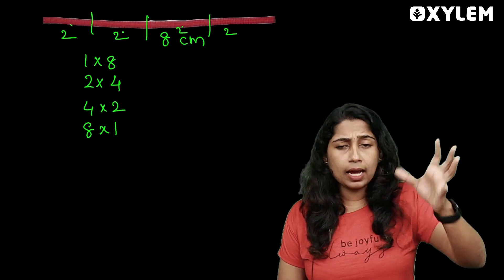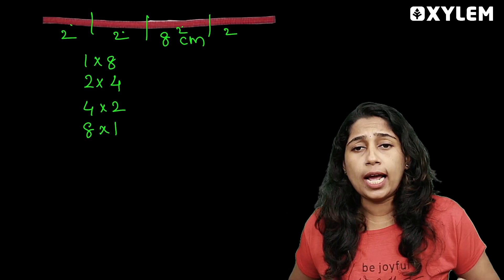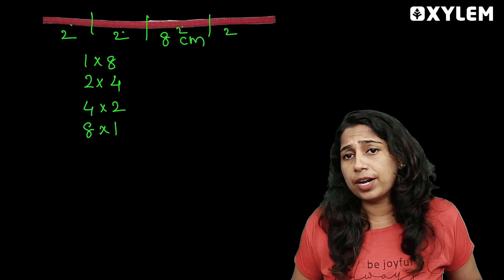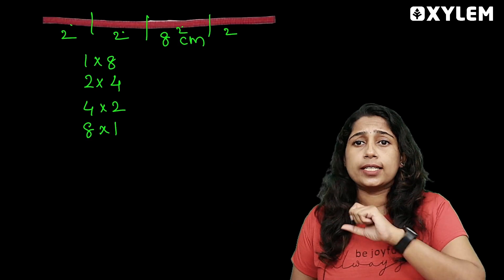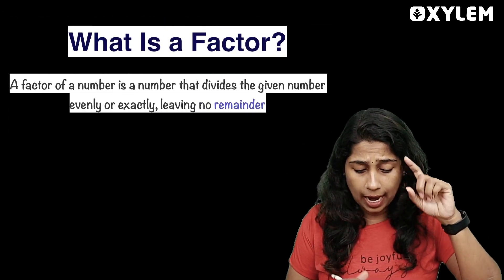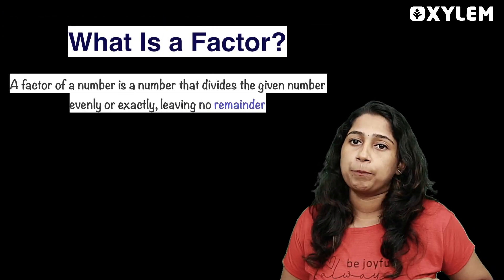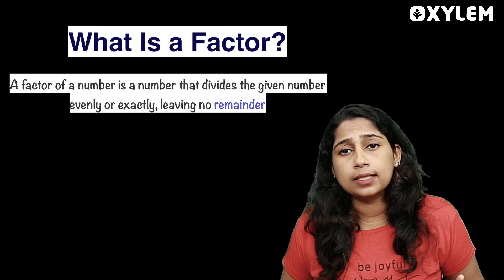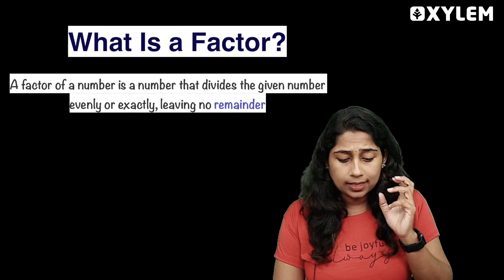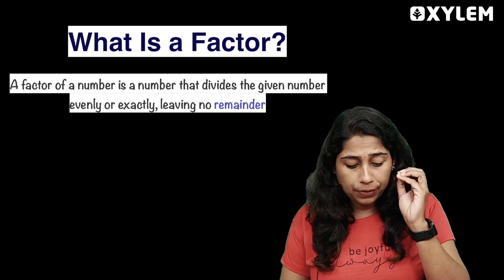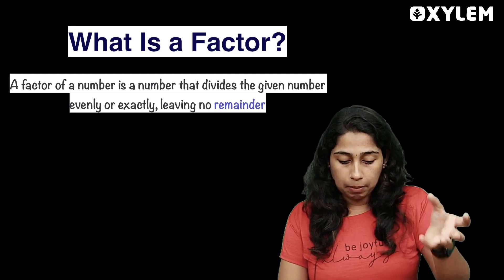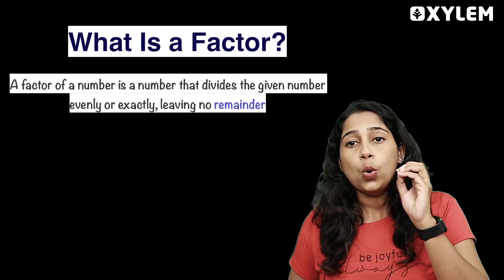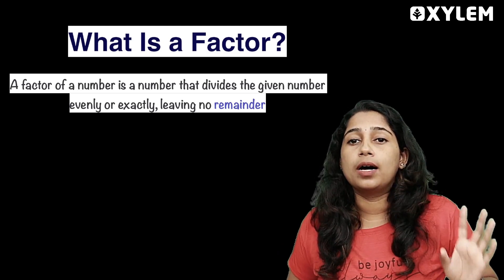Now we have learned a few different arrangements — how to distribute in different ways. This is a mathematical concept, and that is called a factor. What are factors? A factor of a number is one that divides the given number evenly or exactly without a remainder.